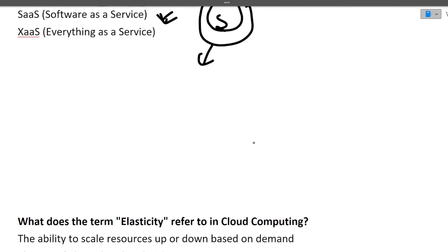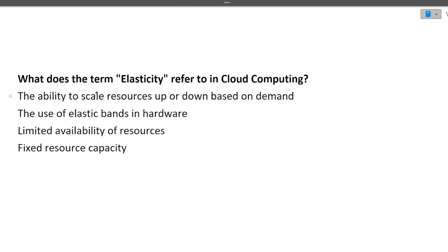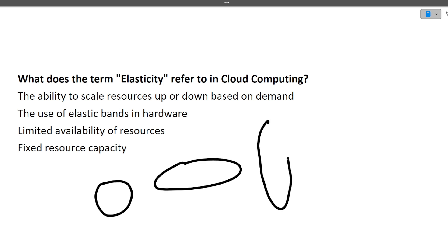The next question is: what does the term elasticity refer to in cloud computing? Like a rubber band that can be expanded or contracted, it means we can scale the server up or down. So elasticity is the ability to scale resources up or down based on demand. If there is huge demand, we can increase server configurations, infrastructure, and the number of pods.